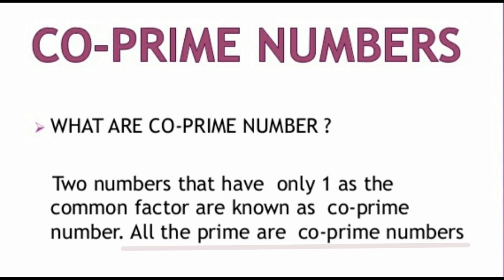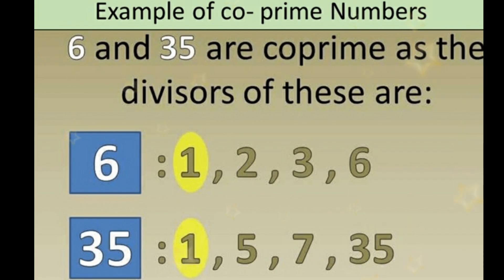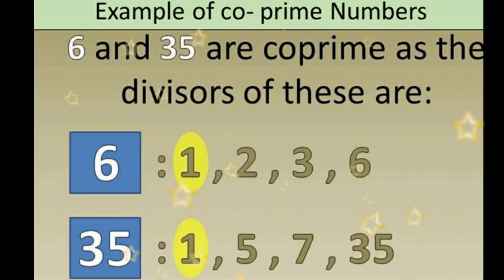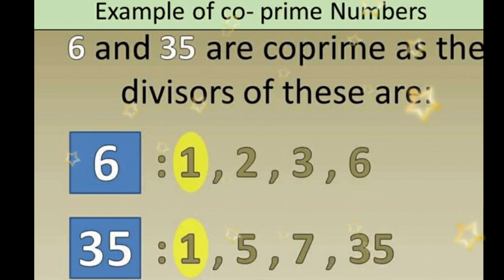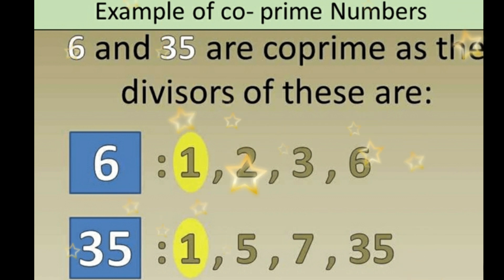Whenever a question asks you about co-prime numbers, first take out all the factors and then check if only 1 is a common factor. If yes, they are a co-prime pair. Only 1 should be the common factor — not more than one.